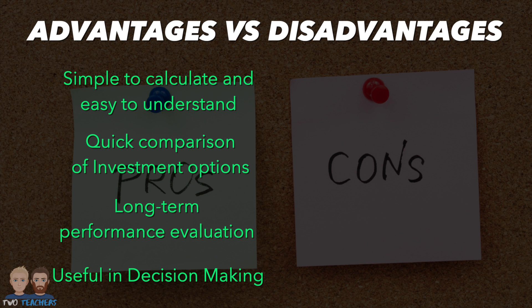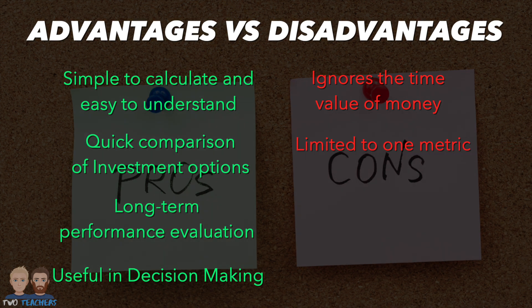Whilst the average rate of return offers some valuable insights for businesses, it also has some limitations that must be considered. The ARR calculation does not account for the time value of money, failing to consider the fact that a pound received in the future is typically worth less than a pound received today. Another potential issue is that the ARR does not consider other essential factors such as cash flows, risks, or market conditions that can influence investment decisions, potentially leading to inaccurate assessments of investment performance. But most crucially, the average rate of return relies on the estimation of future profits, which can be challenging to predict accurately, especially for long-term investments.